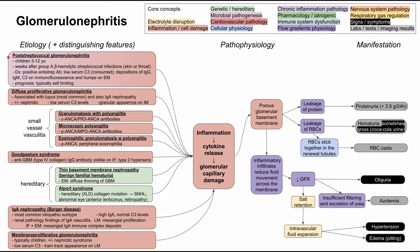Post-streptococcal glomerulonephritis is more common in children, typically ages 3 to 12, occurring weeks after a Group A strep infection of the skin or throat. Diagnosis involves a positive anti-strep antibody and low serum C3, a complement protein that gets consumed. On electron microscopy you'll see humps, and on immunofluorescence you'll see deposits of IgG, IgM, and C3. The prognosis is generally good and typically self-limiting.